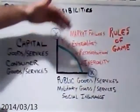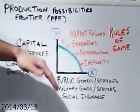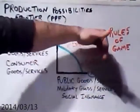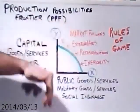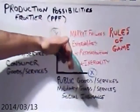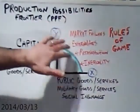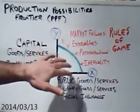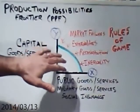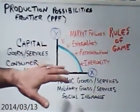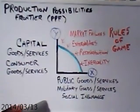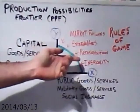So there's pressure from market failures and externalities on the production possibilities frontier not to expand and to stay at the present level, with the proceeds of the current PPF being redistributed. Now we have redistribution itself.